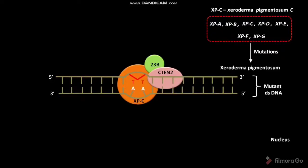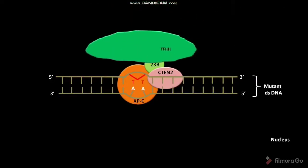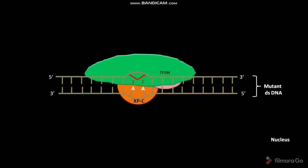The protein complex containing XPC-23B and Centrin-2 then recruits a multiprotein complex called TF2H. TF2H is a transcription factor. The multiprotein complex contains 10 proteins. Some of these proteins act as helicase subunits. These helicase subunits are present in their inactive form.